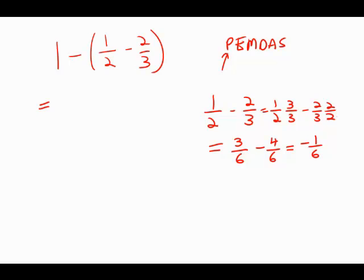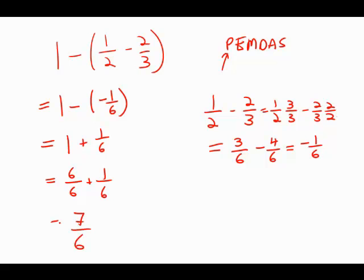And I know that what's inside the parentheses equals negative one-sixth. Well, negative times a negative is a positive. This is one plus one-sixth. Another way to say that is six over six plus one over six. And of course, that equals seven over six.